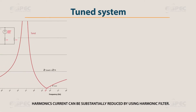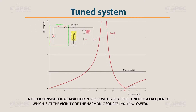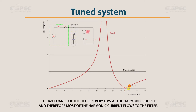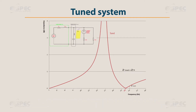Harmonic current can be substantially reduced by using a harmonic filter. A filter consists of a capacitor in series with a reactor, tuned to a frequency at the vicinity of the harmonic source — 5% to 10% lower. The impedance of the filter is very low at the harmonic source, and therefore most of the harmonic current flows to the filter. This way, the harmonic current doesn't flow toward the power source (transformer), and as a result, the voltage is not distorted.